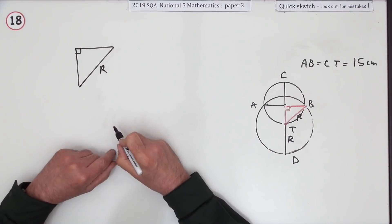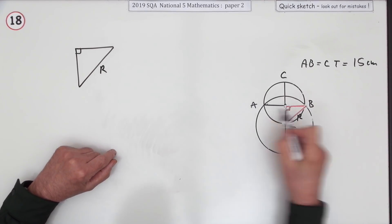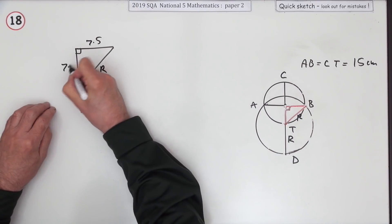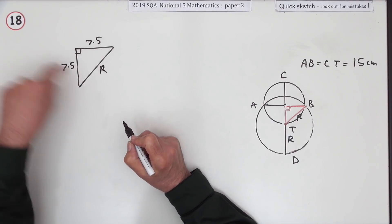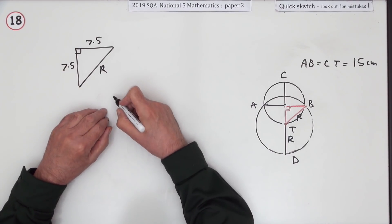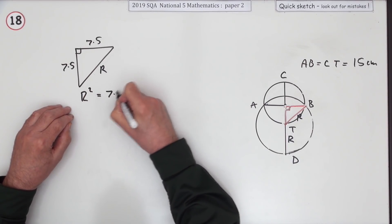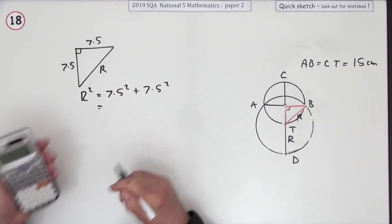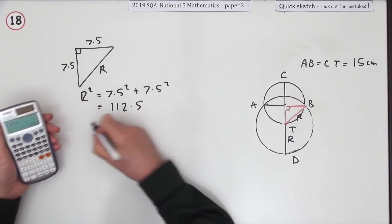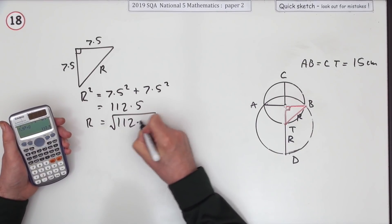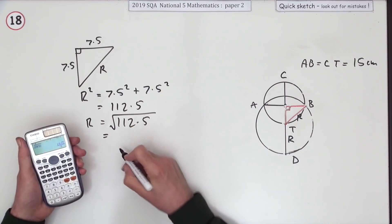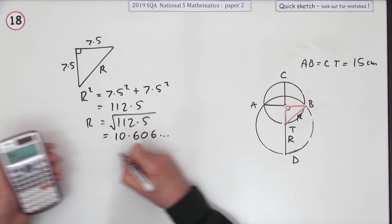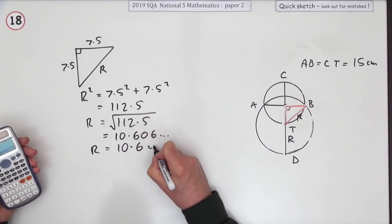You've got the radius of the larger circle. That chord is half the diameter, so that's 7.5, and it's also 7.5 the other way. Using Pythagoras: r squared equals 7.5 squared plus 7.5 squared, which gives 112.5. So the radius of the larger circle is the square root of 112.5, which is 10.606 — just say the radius is 10.6 centimetres.